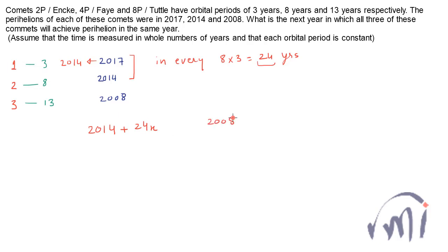This expression will give us all the years in which these two planets will have their perihelion together. And the expression 2008 plus 13 multiplied by y will give you all the years in which comet 3 will have its perihelion. For them to have perihelion together, these two expressions should have the same value.